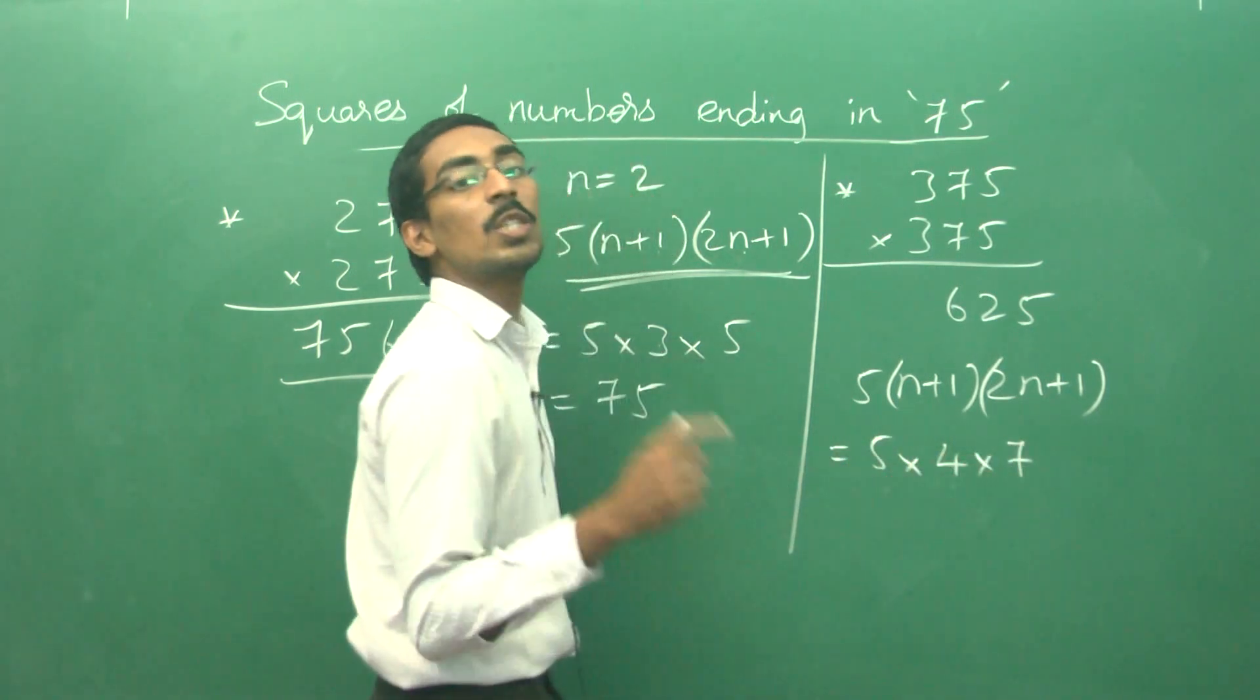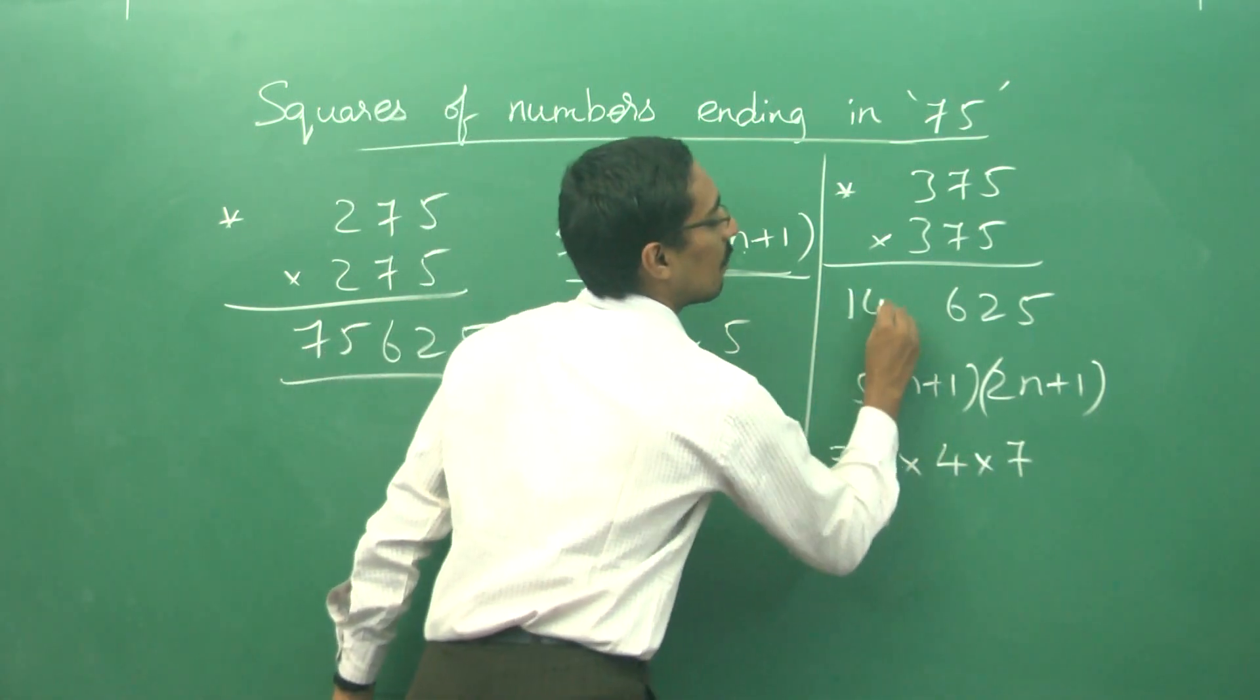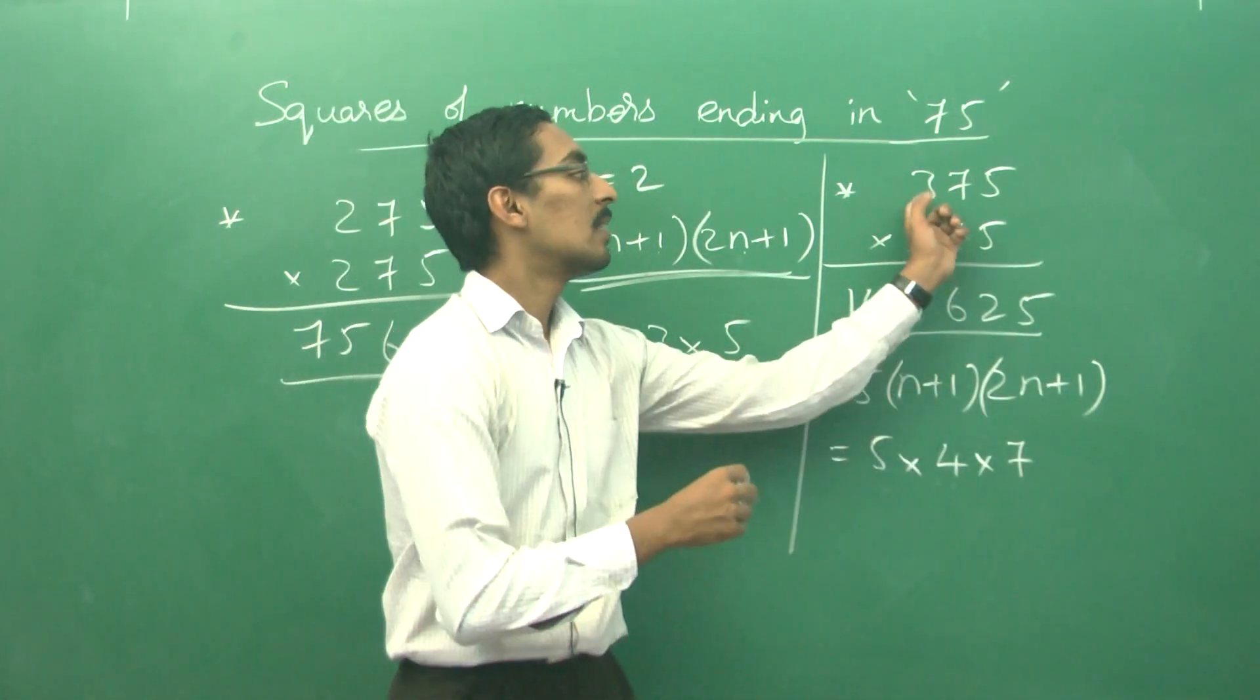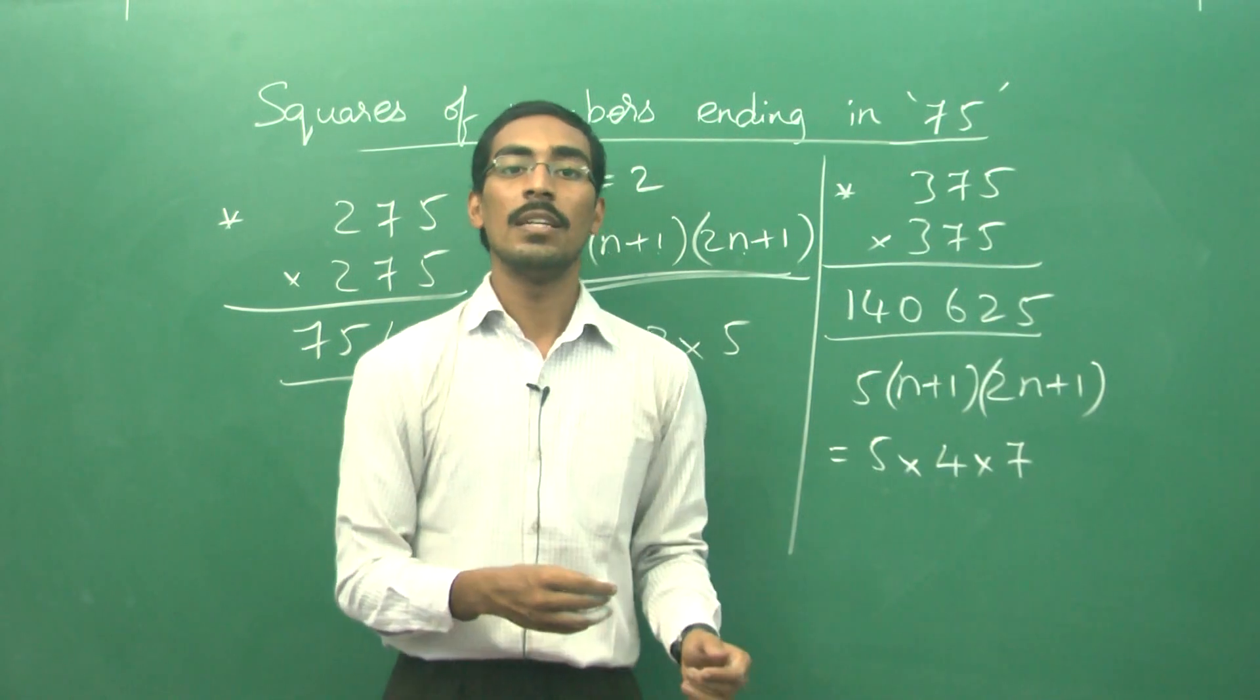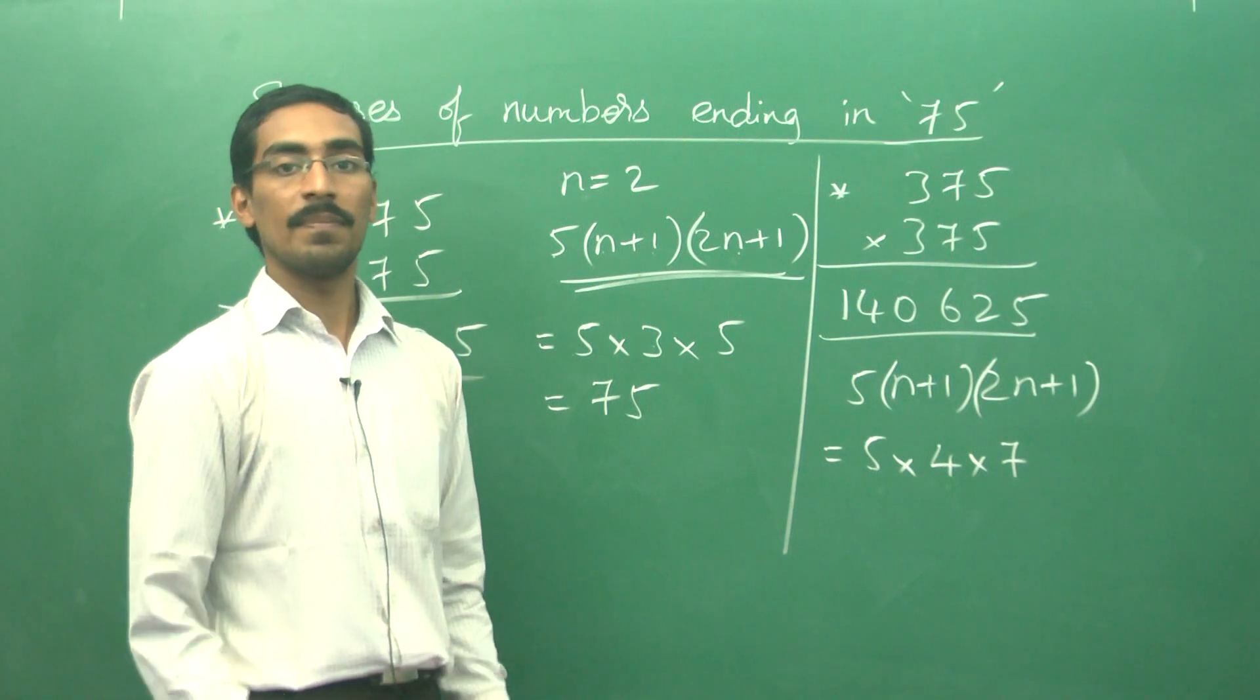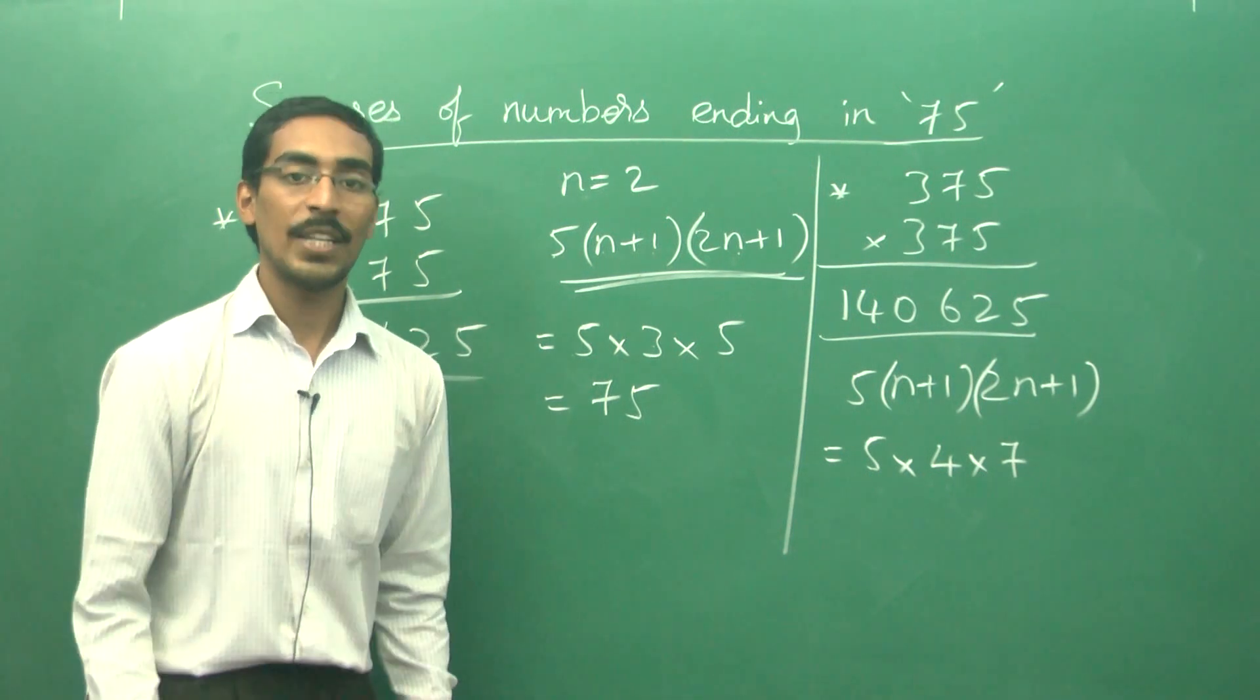5 into 4 is 20, 20 into 7 is 140. So just write 140,625. This is the easy way to multiply 375 into 375. Squares of numbers ending in 75. Is this clear? Thank you.